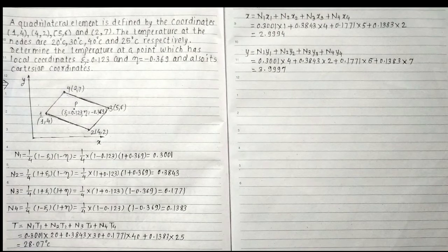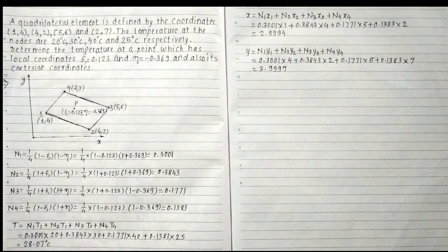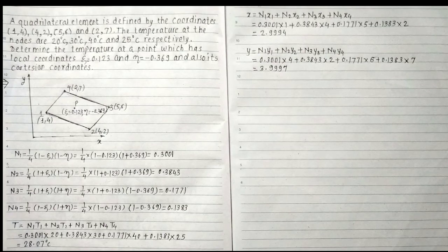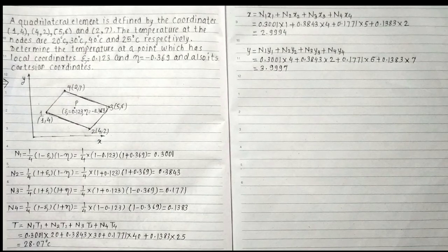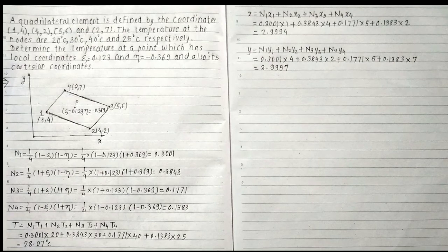The temperature is equal to 28.07°C. Now I will calculate the x-coordinate as x = N1·X1 + N2·X2 + N3·X3 + N4·X4, which equals 0.3843×1 + 0.3843×4 + 0.1771×5 + 0.1383×2. So the x value is equal to 2.9994.